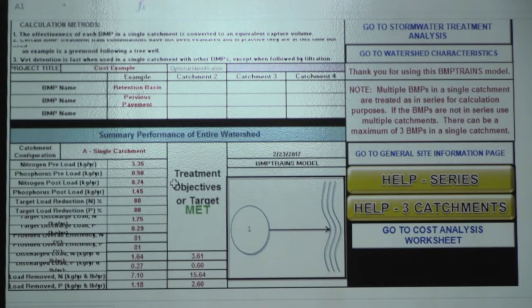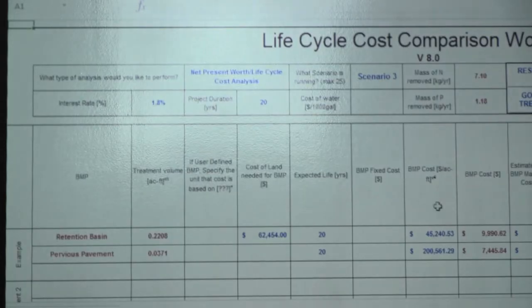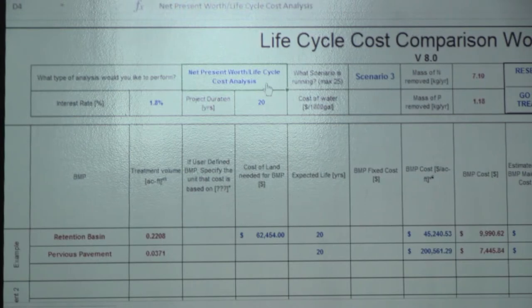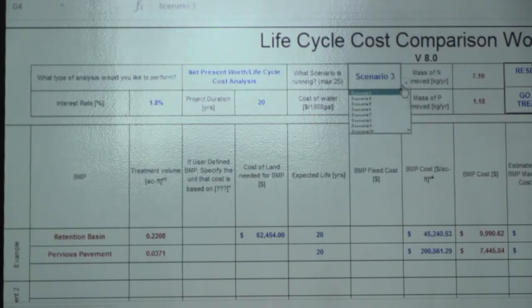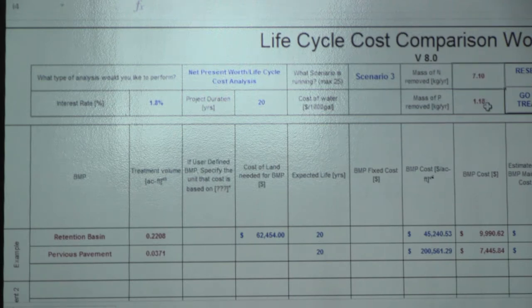Now that we know we've met our target objectives, we want to go through and see how much this solution costs compared to the previous two we evaluated. If I go over to the 'go-to cost analysis worksheet' button, it brings me to this page. On this worksheet there are a number of data points that need to be entered — everything in blue is a user input. First we need to specify what type of analysis we're doing: net present worth or capital cost. For this, we're doing a net present worth analysis. You can run up to 25 different scenarios. This is scenario three of the scenarios we're examining. The mass of total nitrogen and total phosphorus removed is carried over from the summary page so we can see how many kilograms per year we're removing. Here we specify our interest rate of 1.8% and our project duration of 20 years.